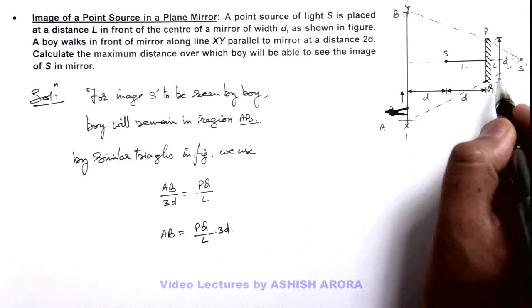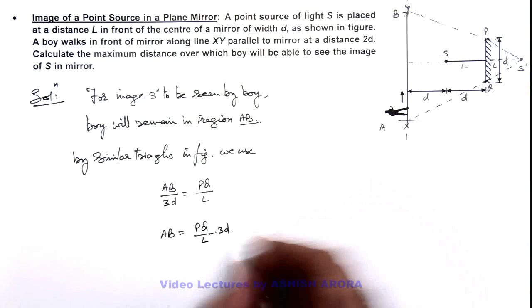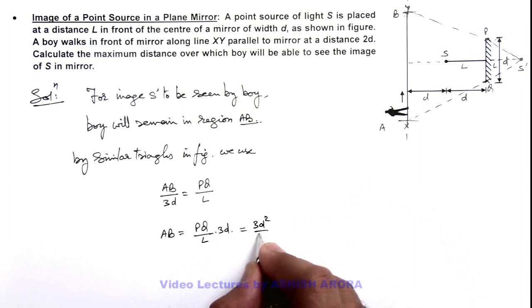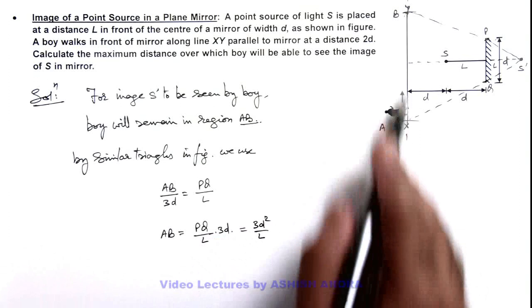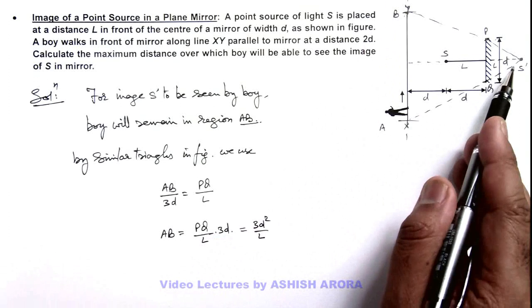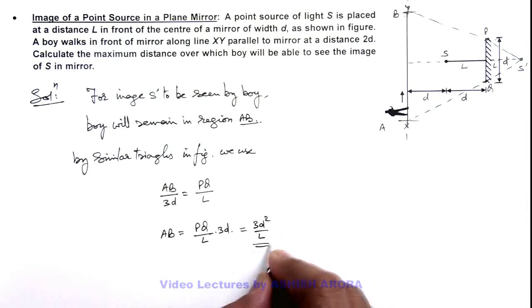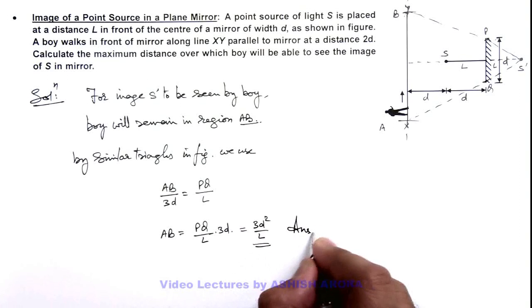And PQ is the width of mirror which can also be written as d. So here this is equal to 3d squared by L. So we are required to find the maximum distance over which the boy will be able to see the image in the mirror, so this can be given by 3d squared by L. That will be the result of this problem.